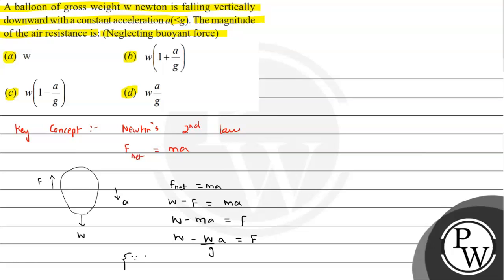Since we know that weight is mass into acceleration due to gravity, finally the expression we can see w is common. So it will be 1 minus a by g. That will be the friction force acting on the balloon.